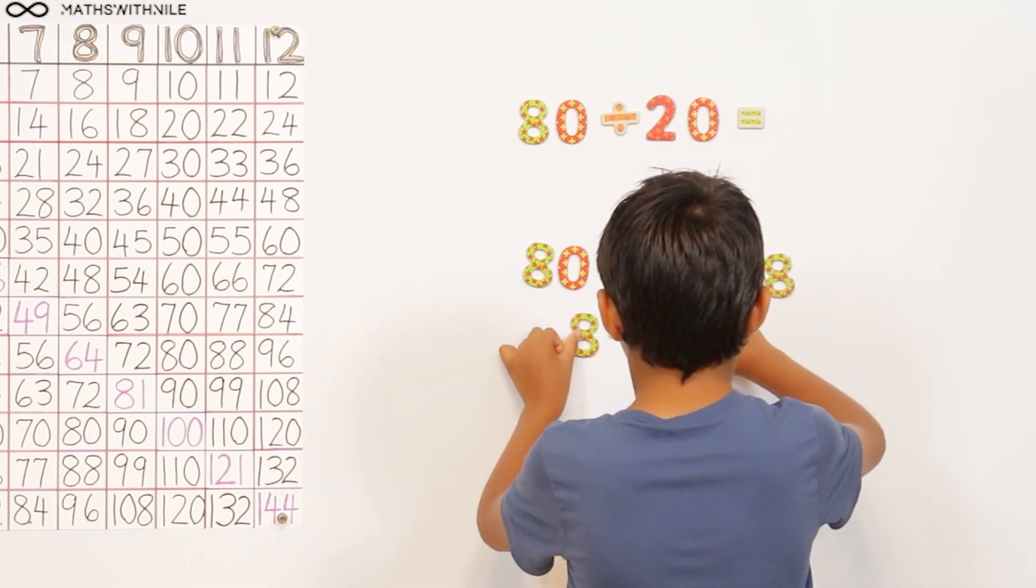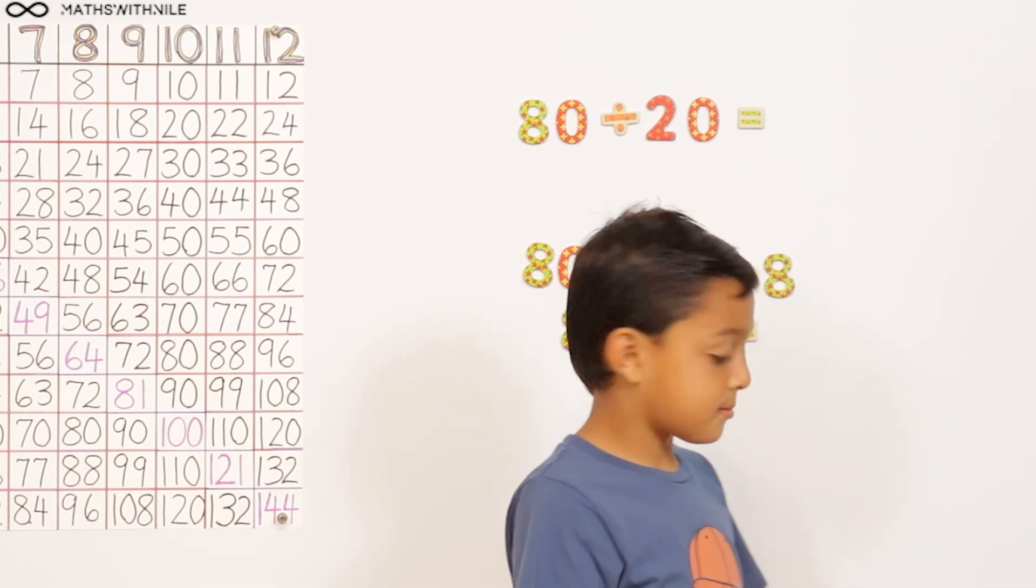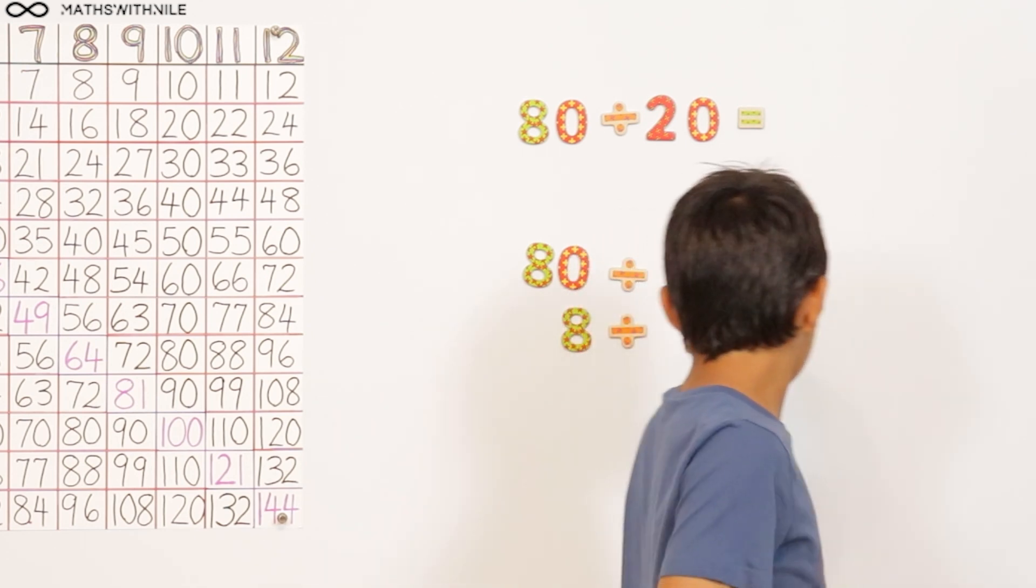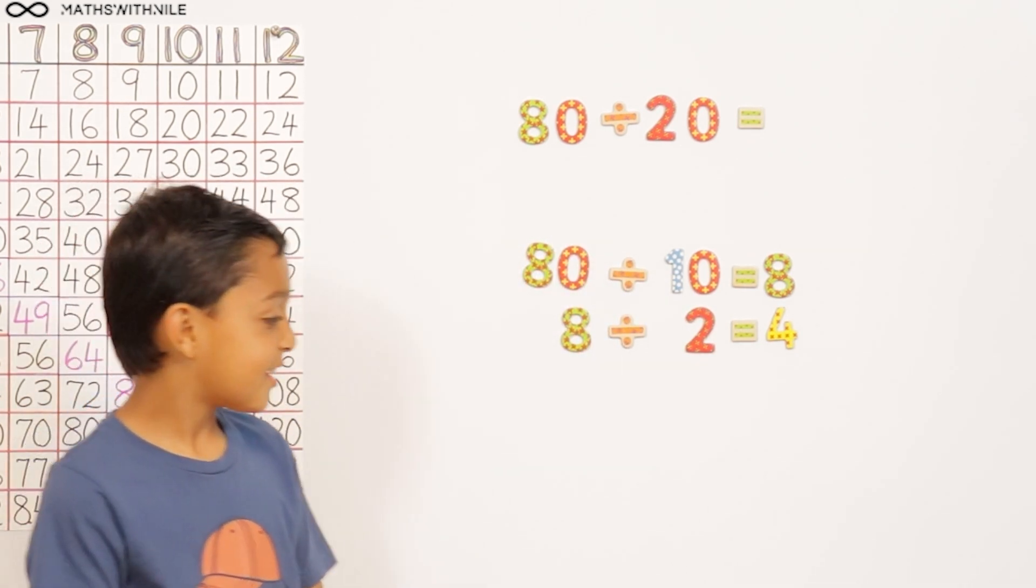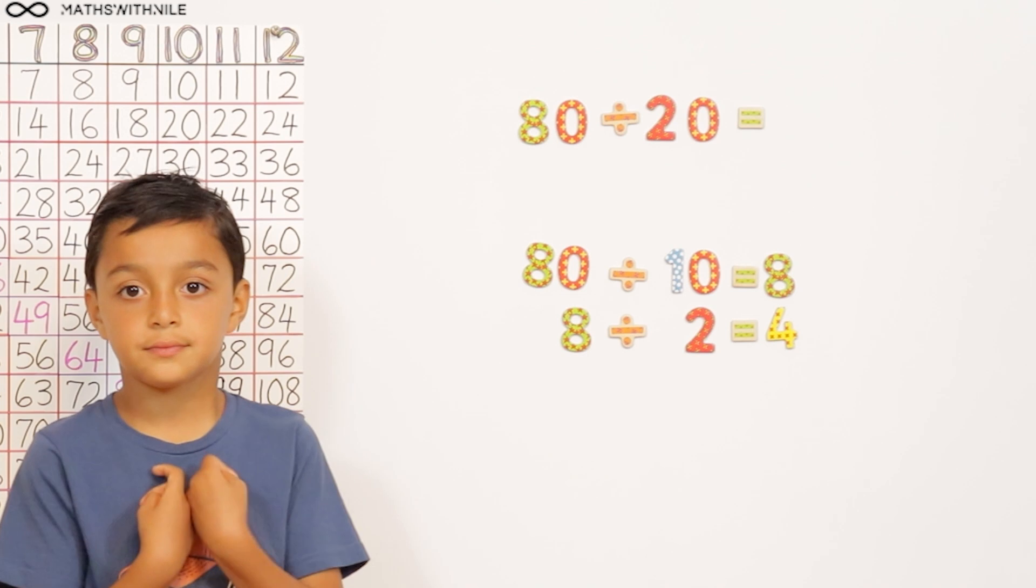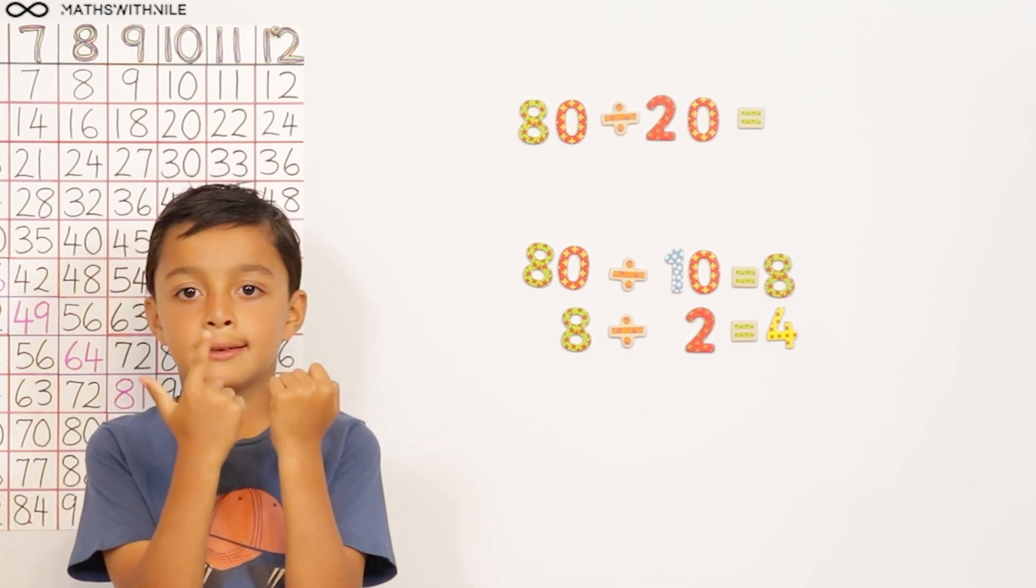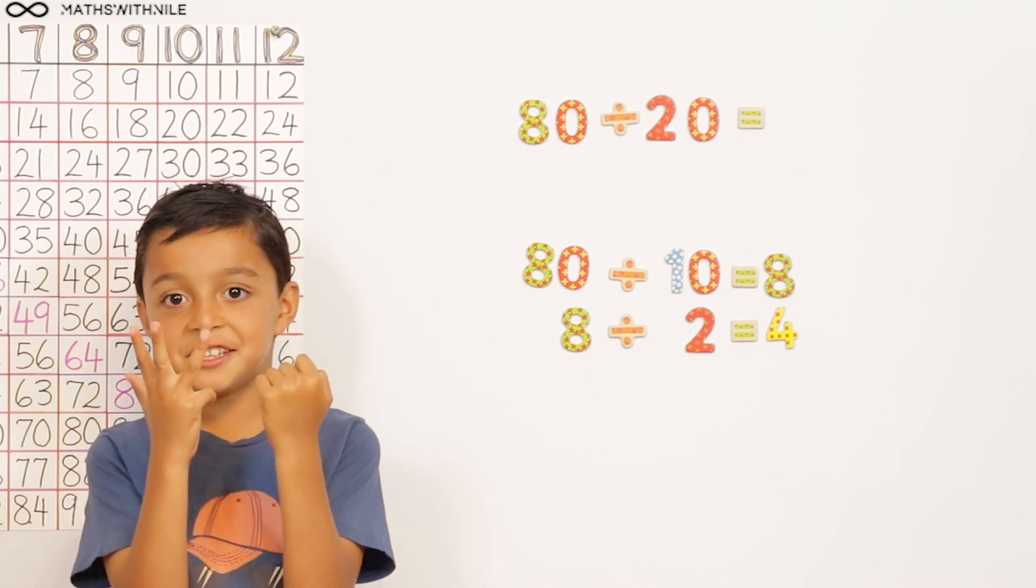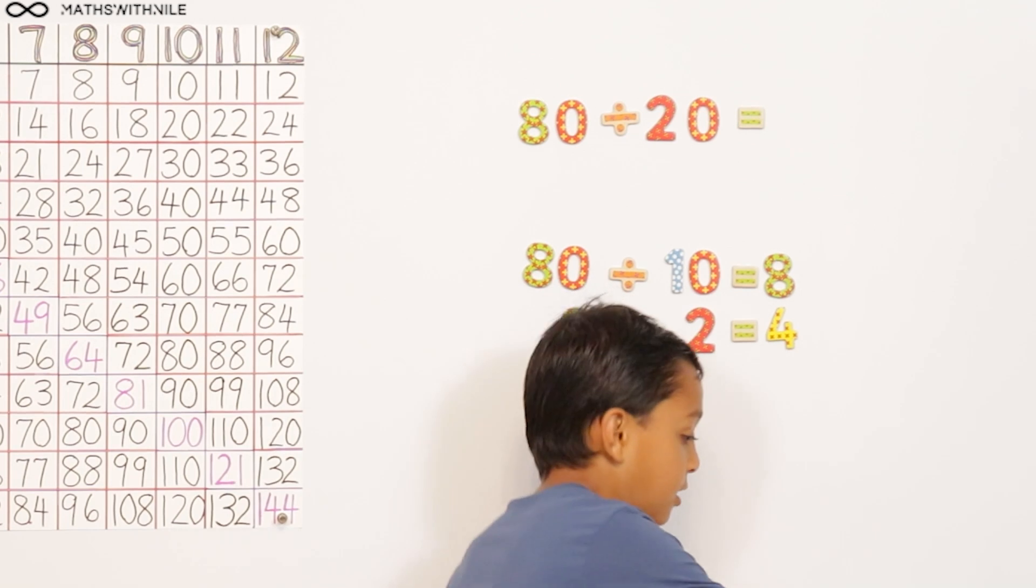So can you put 8 divided by 2 on the board? 8 divided by 2 equals 4. Equals 4. So does that mean our final answer is 4? I think it does mean that, but let's check on our fingers. 80 divided by 20 to make sure that our method is correct. 20, 40, 60, 80. Okay, so what's the answer? 4. Very good. So put your answer up there.